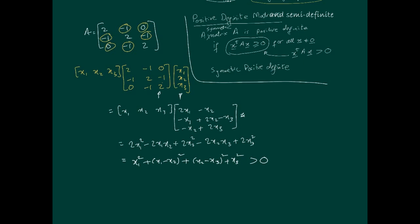Unless, of course, x1, x2, and x3 are equal to zero. But I'm only interested in it being greater than or equal to zero, and that is actually the case. So this matrix A is a positive definite matrix.